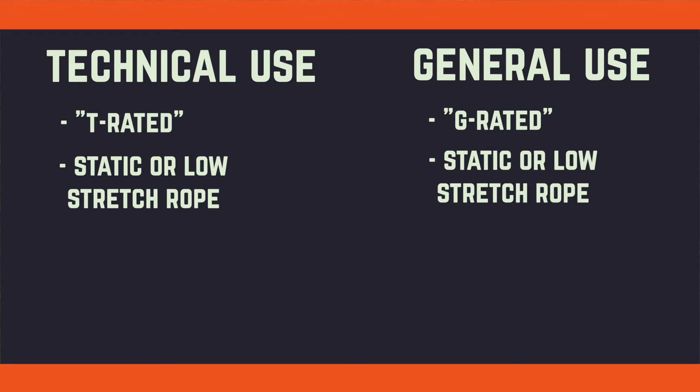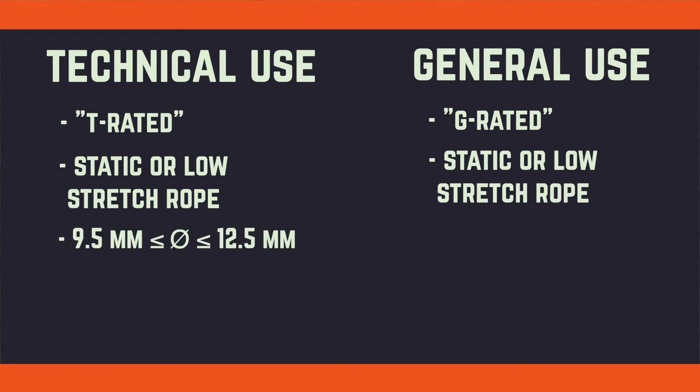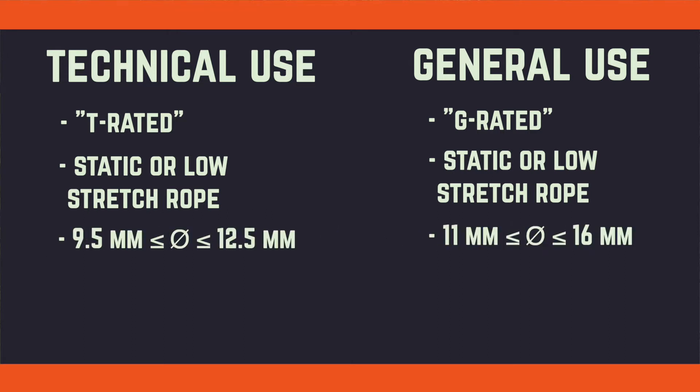Technical use ropes must have a diameter between 9.5 and 12.5 millimeters. General use ropes must fall between 11 and 16 millimeters.